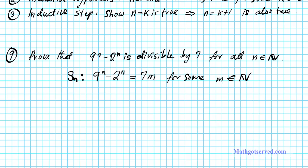If you can write any number as 7 times an integer, then that number is divisible by 7, because when you divide both sides by 7, you're left with that integer on the right side — or equivalently, you can factor out 7 from that number. This is the statement we're going to use to carry out our proof.